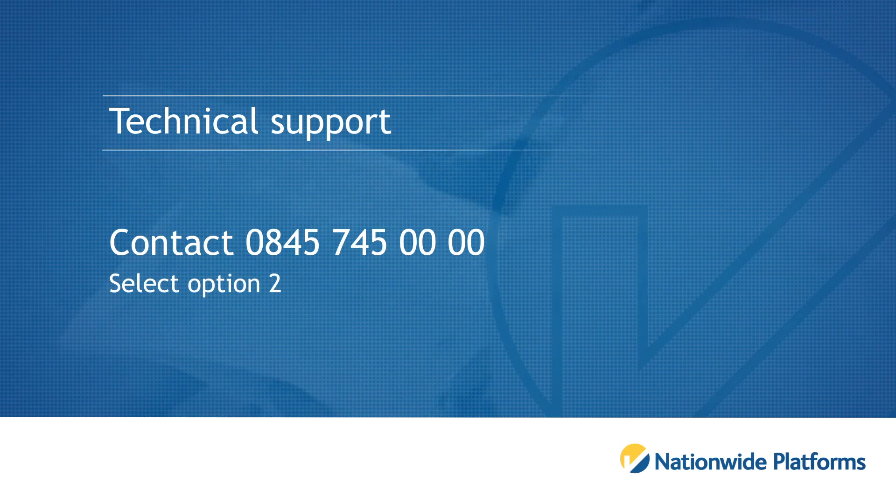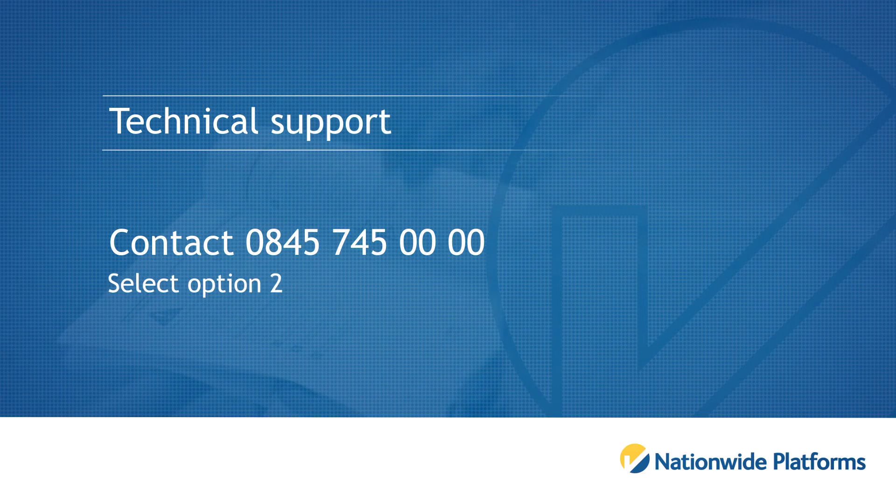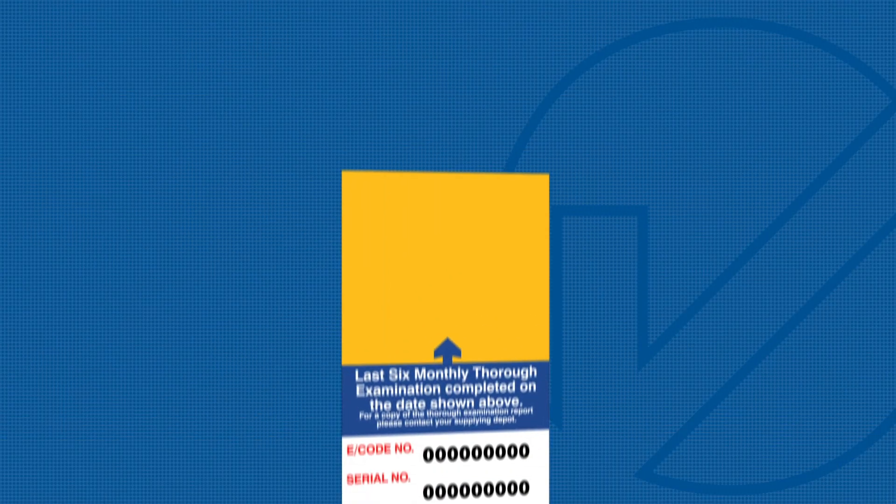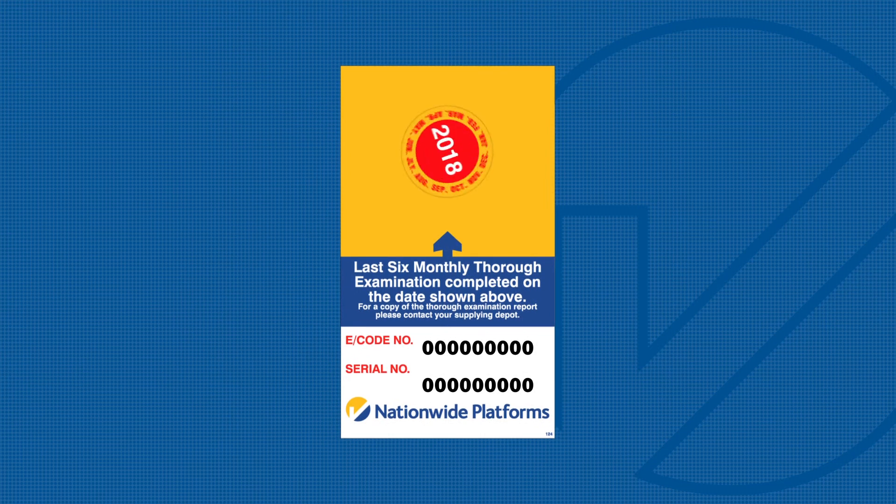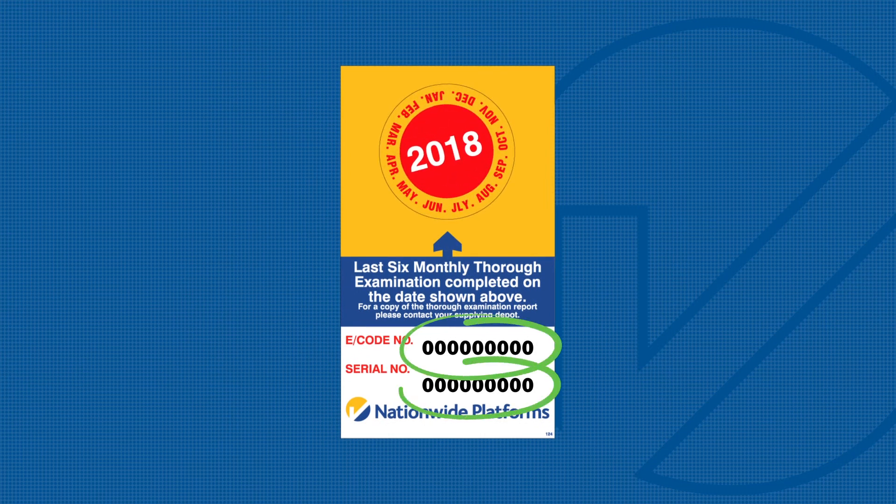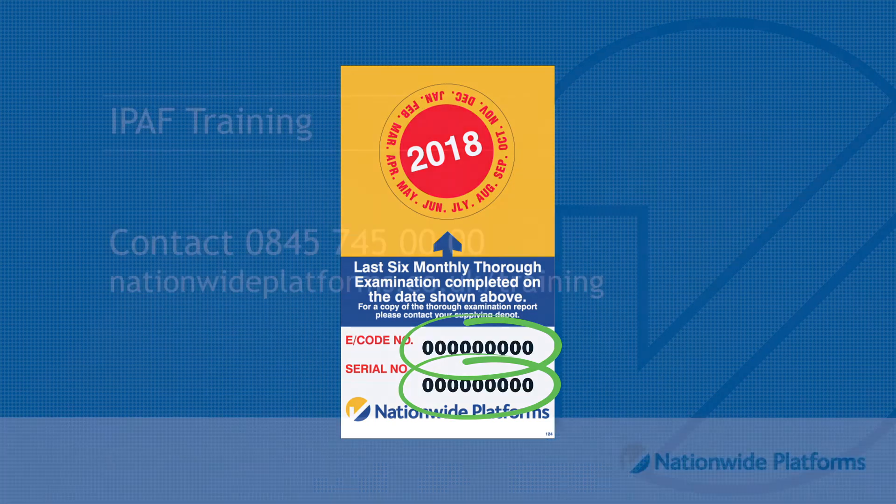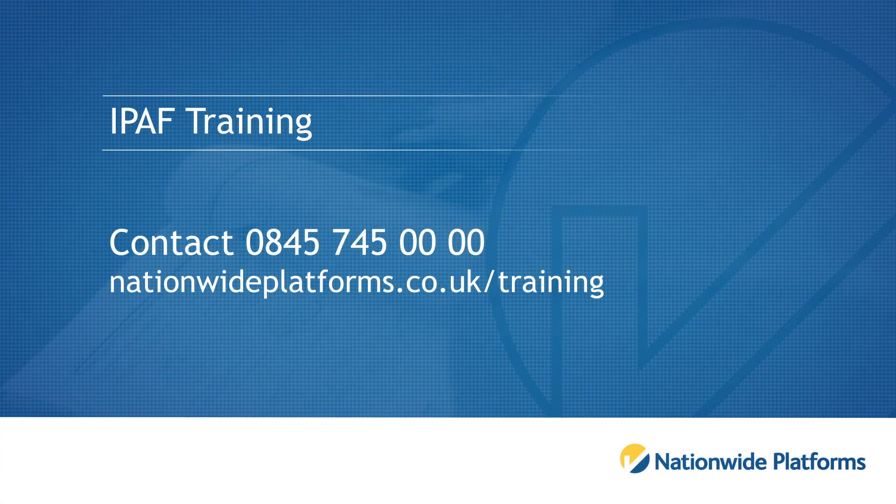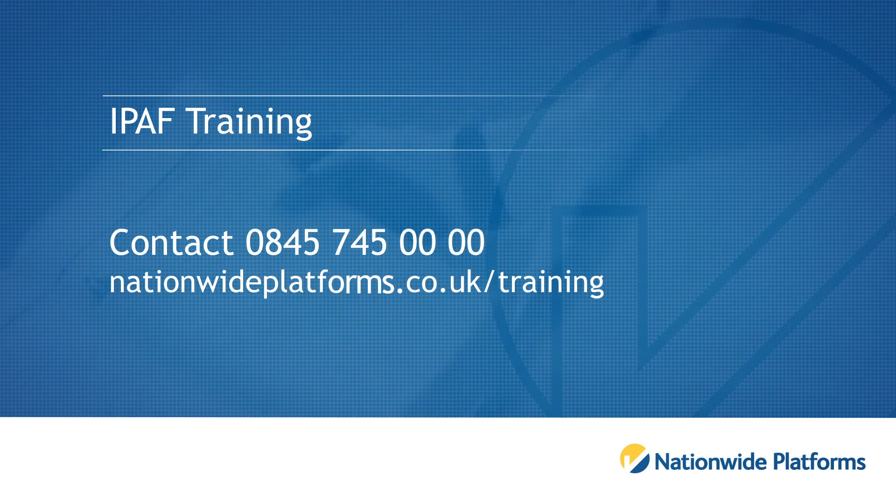For technical support, please contact 0845 745 0000 and select option 2. Please ensure you have your machine serial number and e-code to hand when calling. These can be found on the Nationwide Platforms data plate which is fitted to your machine. For IPAF training, please select option 1 or book online at nationwideplatforms.co.uk/training.